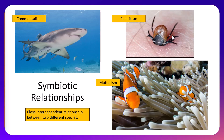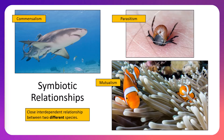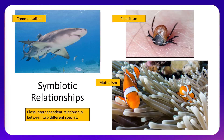A couple more parasite examples: there's something called the tongue-eating louse, which affects fish. This louse swims into the mouth of a fish, consumes the tongue, and attaches itself inside the mouth. Every time the fish opens its mouth to eat, the tongue-eating louse eats the food the fish is trying to eat. Once attached, the fish cannot detach it — it loses its tongue and has a louse stuck in its mouth for the rest of its life.